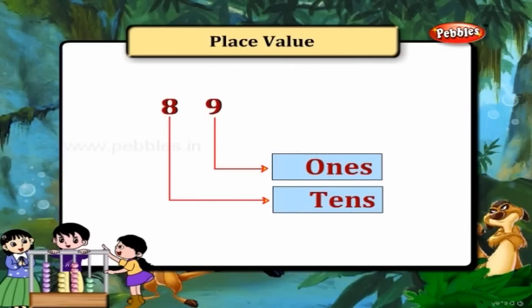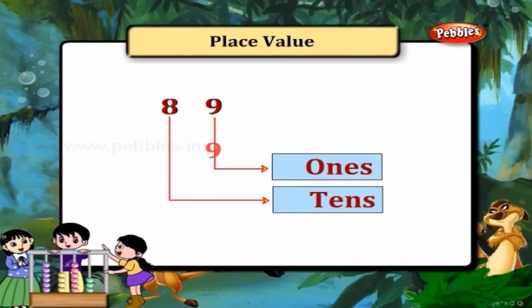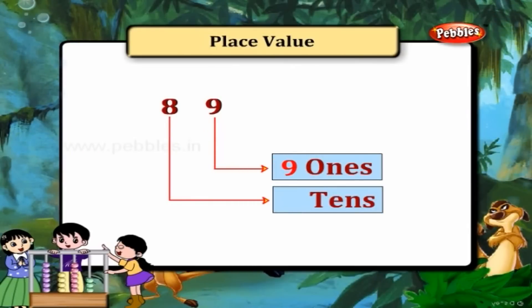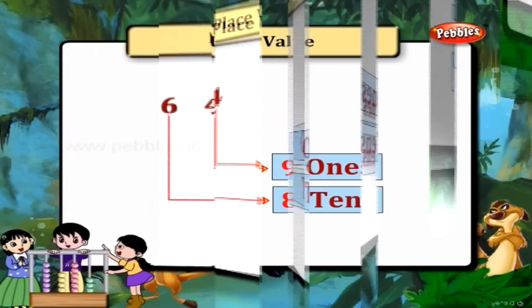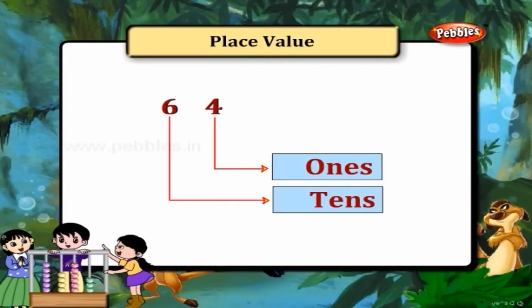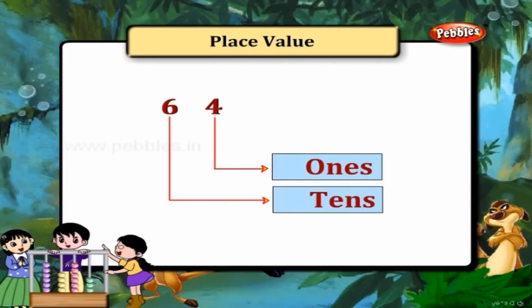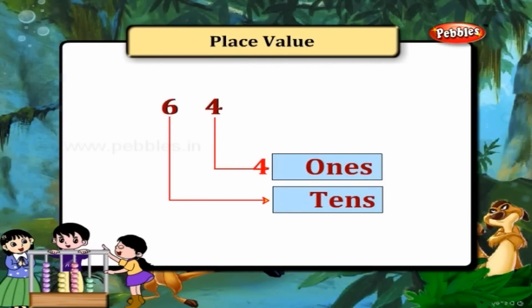In 89, 9 is in the ones place and 8 is in the tens place. 64 is 4 ones and 6 tens.